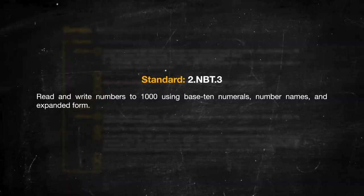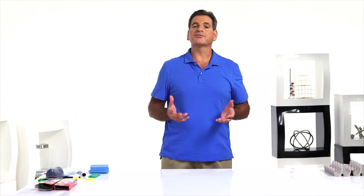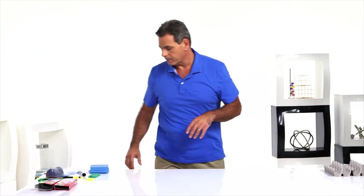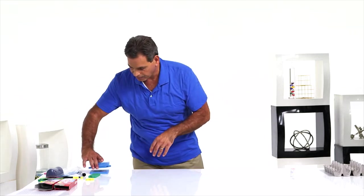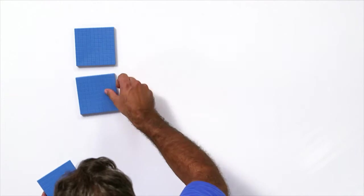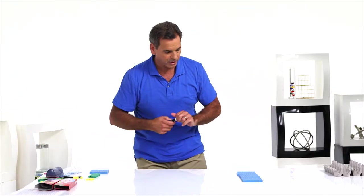On to standard 2.NBT.3. In first grade, students learned how to count to 120 and read and write numbers to 100. Place value strips or base 10 blocks are excellent for teaching expanded form. Let's use base 10 blocks. Tell the students to build the number 300. One, two, three, and tell them to write 300 underneath the model.